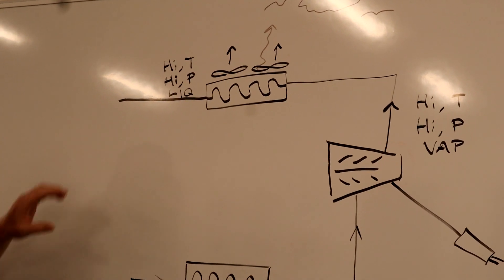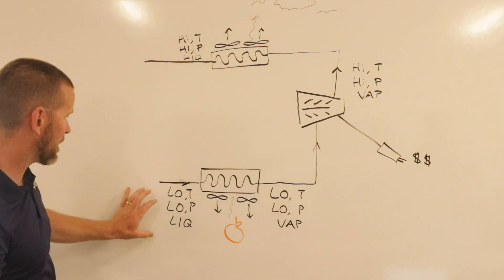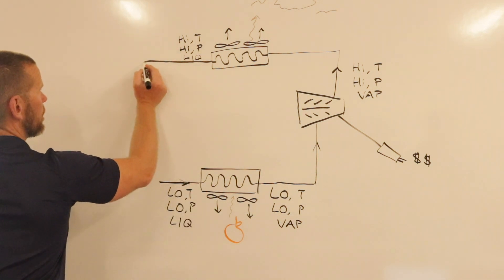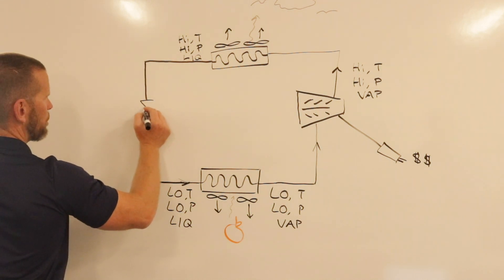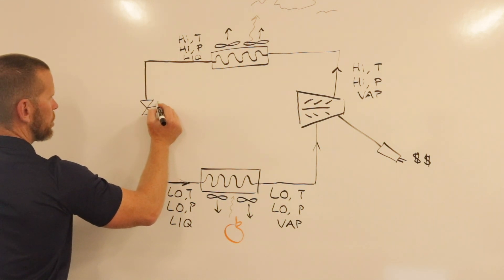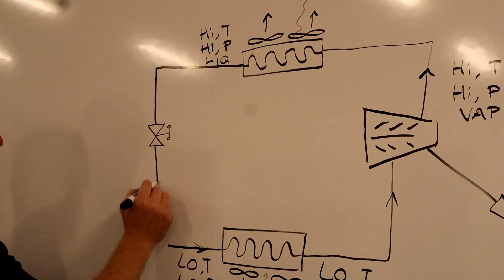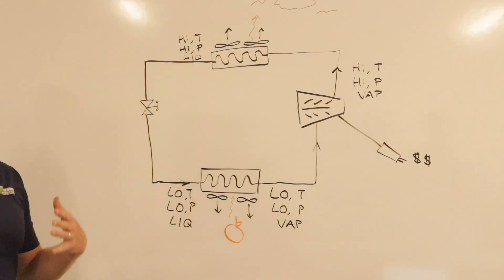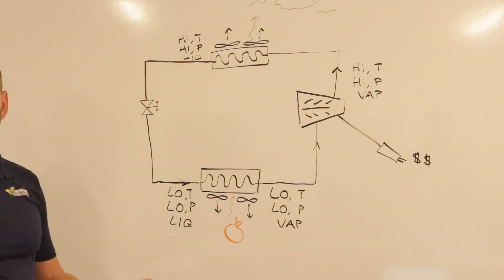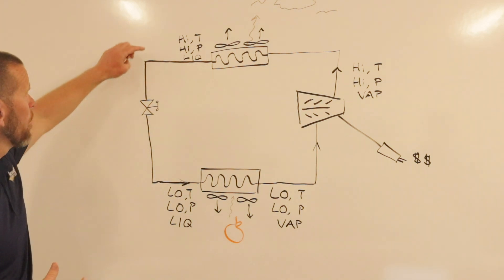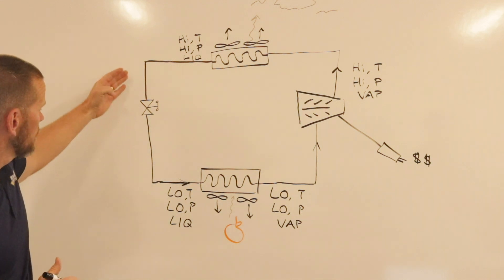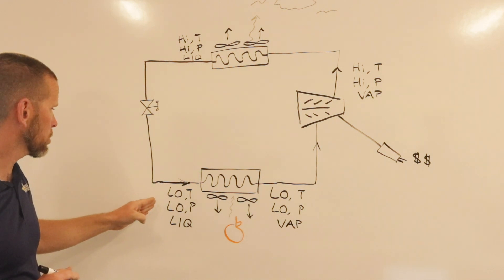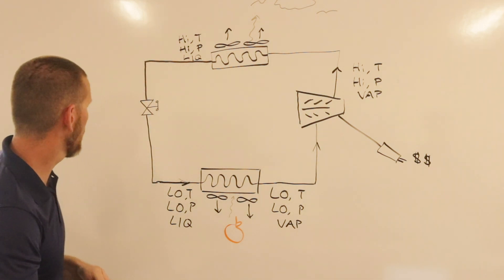To get our high temperature, high pressure liquid back to a low temperature, low pressure liquid that we need to enter the evaporator, we add an expansion device. I'll draw it as a valve, which is what you often see in refrigeration applications, though there are different types. What does this expansion device do? It's an obstruction in the piping that throttles the flow as it passes through, causing the pressure to drop. Because pressure and temperature are related, as pressure drops, so does temperature. When we pass through the expansion valve, we drop back to our original starting point as low temperature, low pressure liquid. We've drawn our cycle.